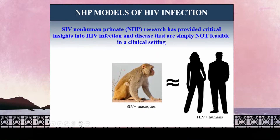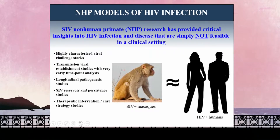SIV non-human primate research has really provided critical insights into HIV infection and disease that is simply not feasible in the clinical setting. While SIV infection of macaque species is not equivalent to HIV infection in humans, it represents probably the best animal model for any infectious disease, recapitulating all of the key features of HIV disease in a slightly accelerated fashion.